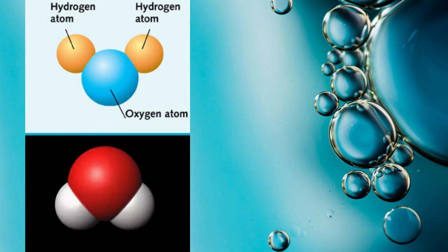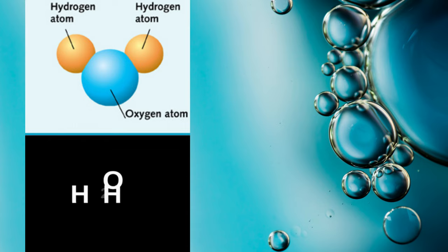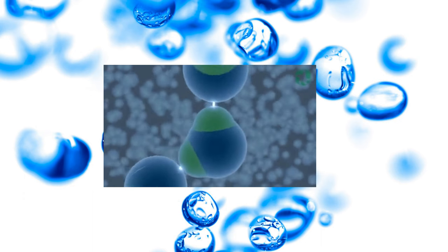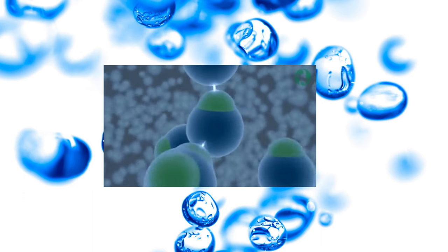Covalent bonds are formed when two atoms share electrons. In the case of water, the hydrogen atoms share their electrons with the oxygen atom. This sharing of electrons creates a stable molecule of water.